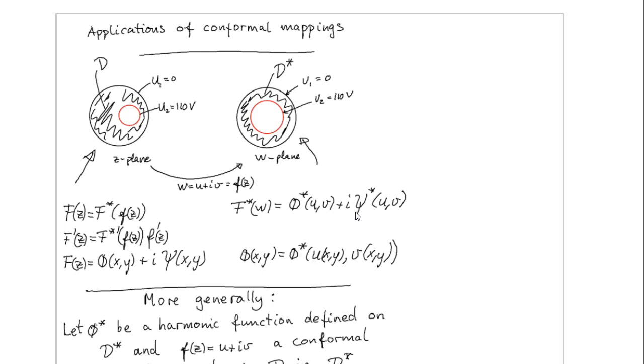So, we need some theorem concerning the cases where we cannot find this imaginary part or the harmonic conjugate of the function phi star. So, what are we going to do then?